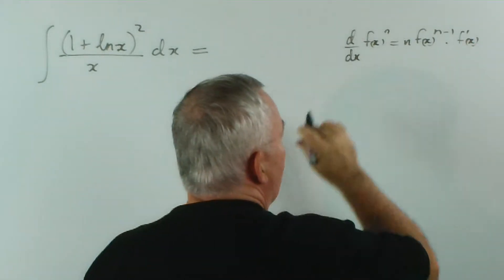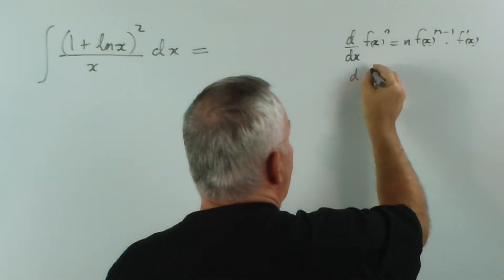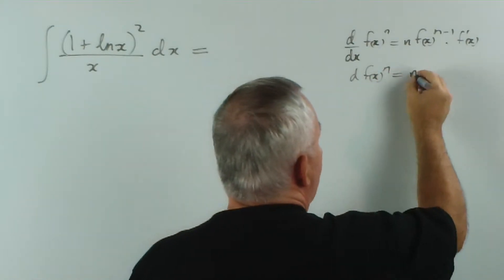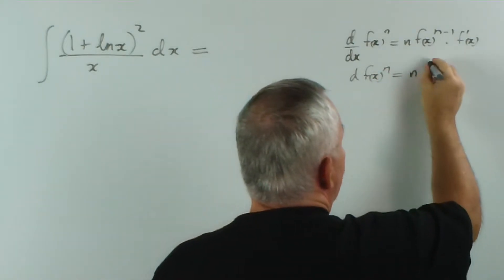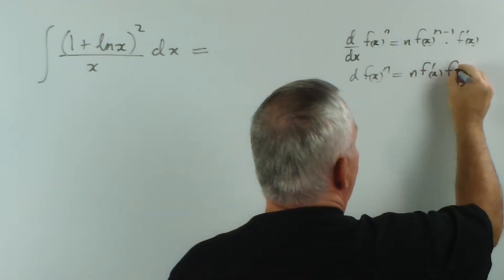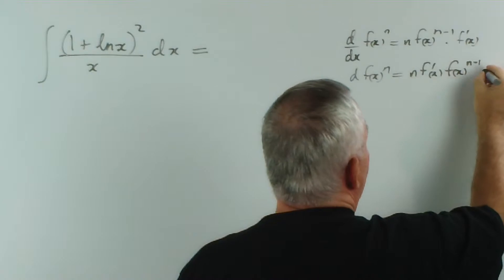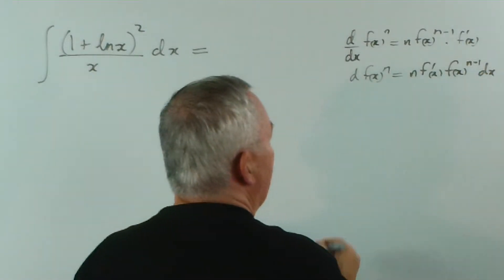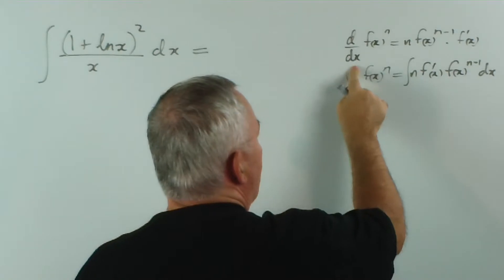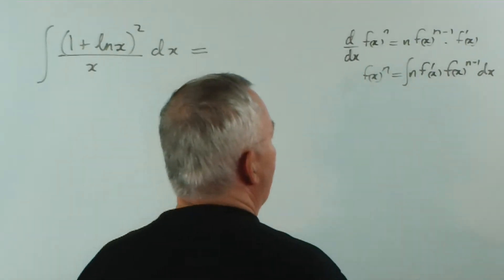And when we multiply both sides by dx, we get d f(x) to the n is n... I'm going to reverse these, because I like to have the derivative first. And when we integrate both sides, the integral of the derivative undo each other, and we're left with this pattern.